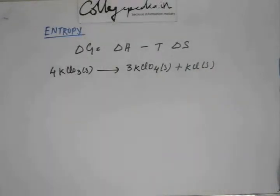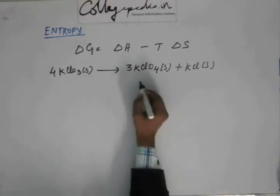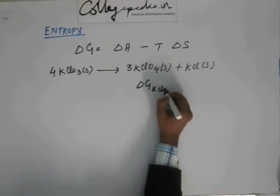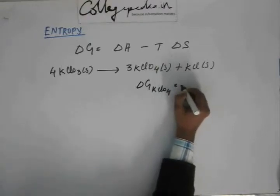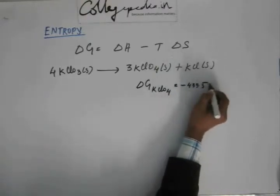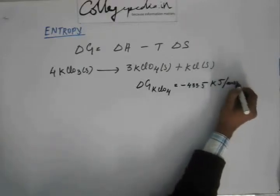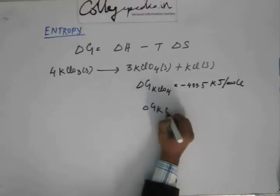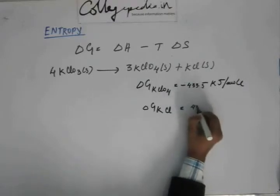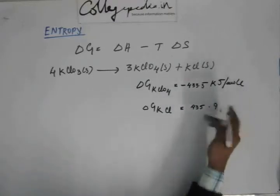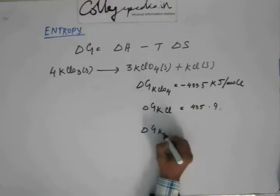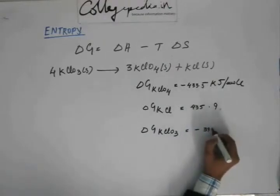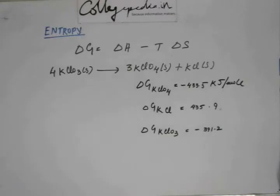Now, in this case, if I have given you certain information regarding delta G, suppose I have told you that delta G of KClO4 is equal to minus 433.5 kilojoule per mole. I have also given you information about delta G of KCl, which is equal to minus 435.9 kilojoule per mole. And delta G of KClO3 is given as minus 391.2 kilojoule per mole.